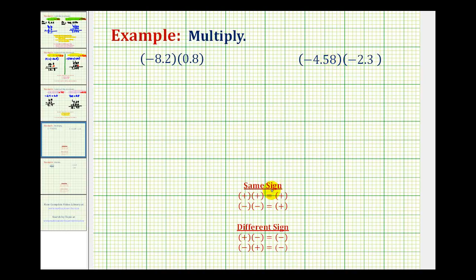Just to review, if we're multiplying two numbers with the same sign, the product will always be positive, meaning a positive times a positive is positive, and a negative times a negative is positive.